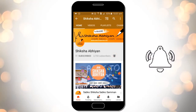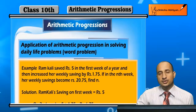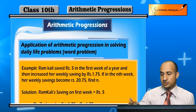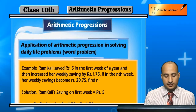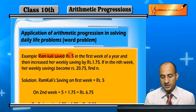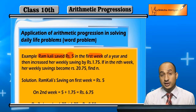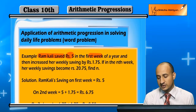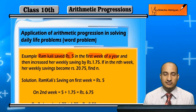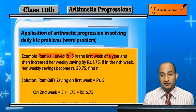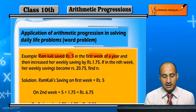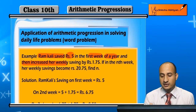Now students, let's look at an example. Raam Kali saved rupees 5 in the first week. So Raam Kali's saving in the first week was rupees 5, and saving is good for her.